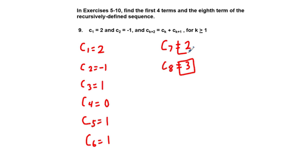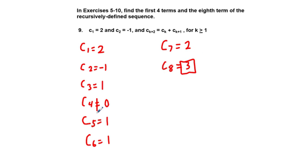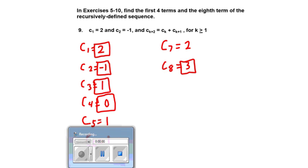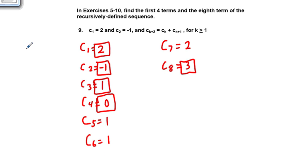We have all these values. c sub 8 is 3, c sub 4 is 0, c sub 3 is 1, c sub 2 is negative 1 — which was given — and c sub 1 was 2, which was also given. That's the odd-numbered problems in section 1 through 10. Work through the even-numbered problems, and I hope this makes a little bit of sense. We will see you next time. Thank you for viewing.